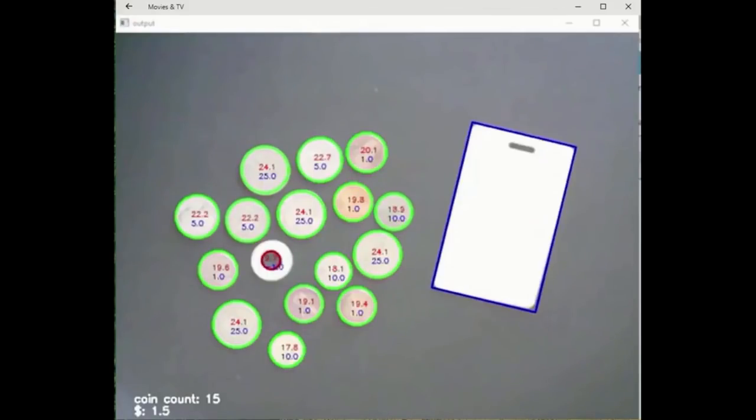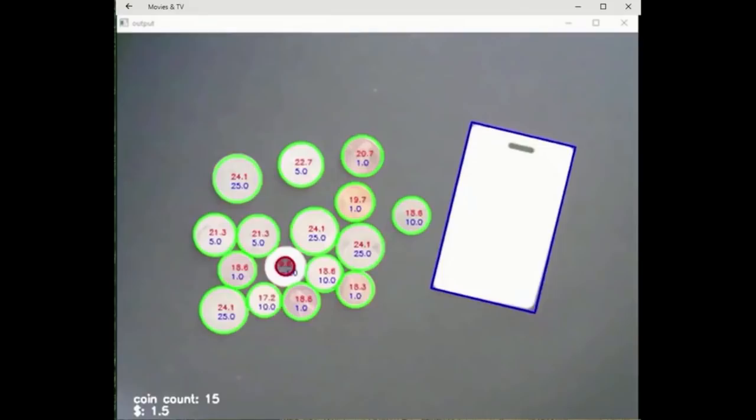The setup uses a standard 480 by 640 webcam mounted on a tripod. The code is implemented in Python and OpenCV on Windows. Identifying coins by their diameter is challenging because the diameters of dimes and pennies differ by only 1.14 millimeters.